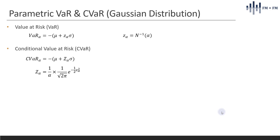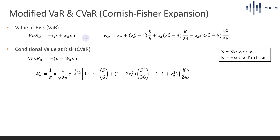In the previous video, we demonstrated the parametric VAR and conditional VAR using the Gaussian distribution, using those formulas to calculate VAR and conditional VAR. If you would like to incorporate skewness and kurtosis into the estimation, you can consider the Cornish-Fisher expansion, where we incorporate skewness and excess kurtosis k into calculating the standard normal variable. The formula for VAR and conditional VAR is still based on the mean return plus the standard normal variable W multiplied by the standard deviation, and the significance level alpha determines W.